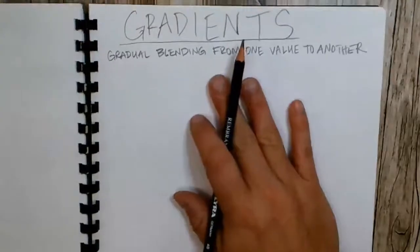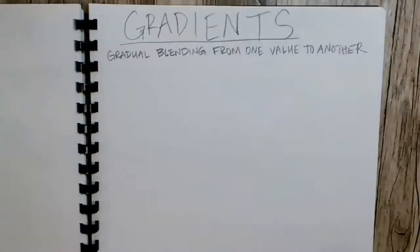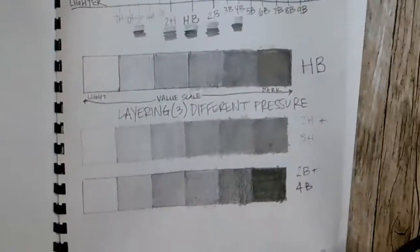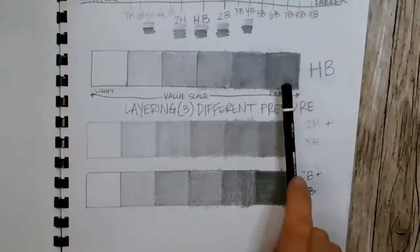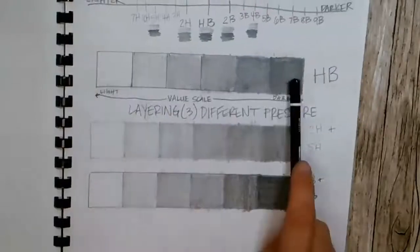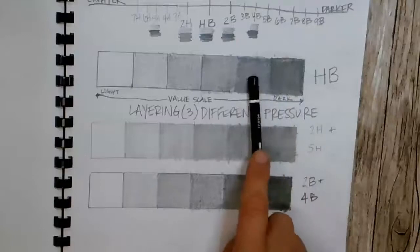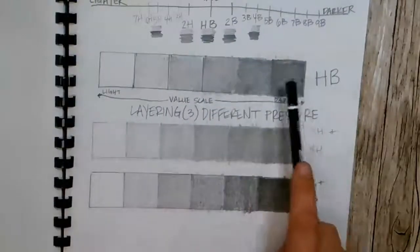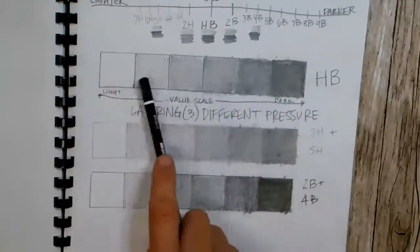So yesterday we talked about value in a value scale. And here the value went from one value to another, but there was a line in between and it was very much structured where each box was a different value.